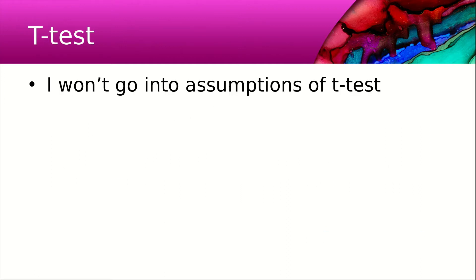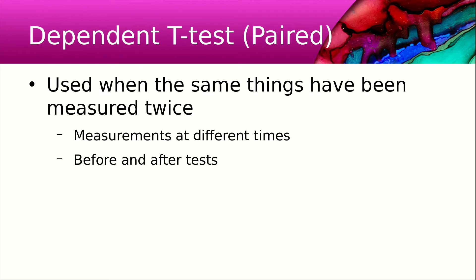I'm not going to go into the assumptions of a t-test, but let's look at a dependent t-test, often called a paired t-test, and it's used when the same things have been measured twice. A common use of a paired t-test is to compare the score of a test before a treatment and the score after the treatment.